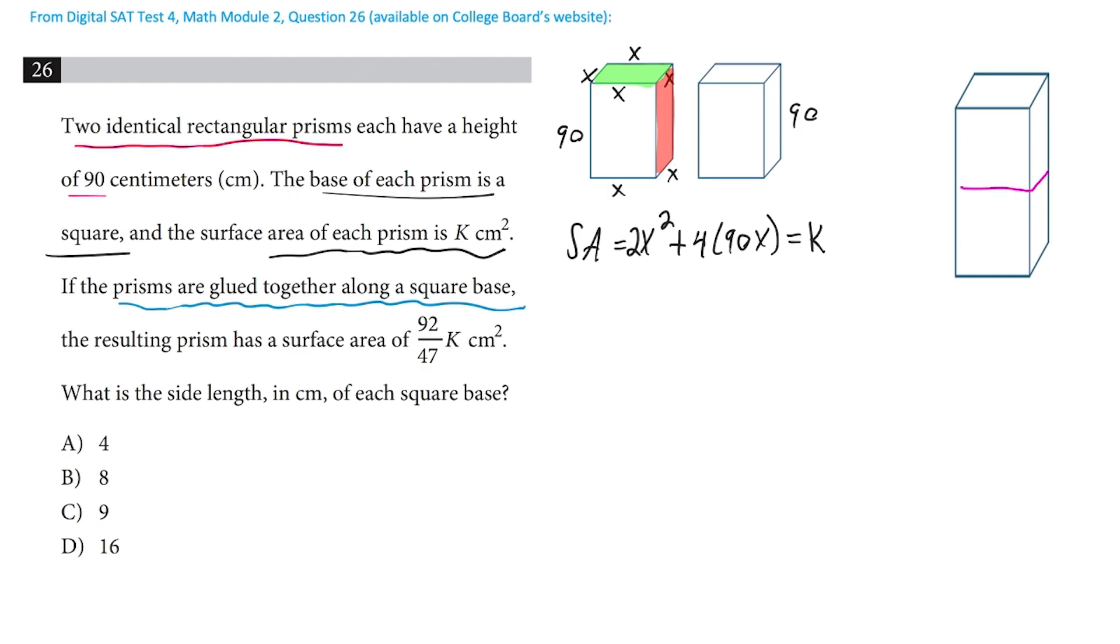So let's just imagine the top of one of these was glued to the bottom of the other one. Now we have a taller shape. Now the height of this new shape is 180, but the bases still have side lengths of x. So if we want the surface area of this new shape, it's got the top and the bottom, two faces, that each have areas of x times x, x squared.